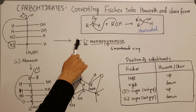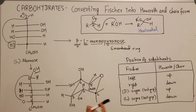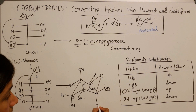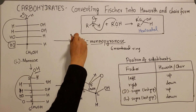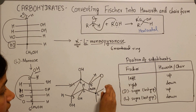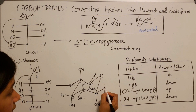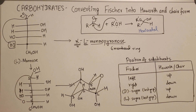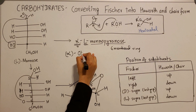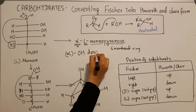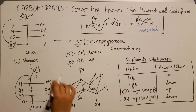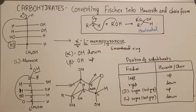This is the anomeric center again. For beta-L, the hydroxy group at the anomeric position is on the upside and H is on the downside. For alpha-L-mannopyranose in the chair form, the hydroxy group is on the downside and H is on the upside. So to summarize: alpha means the hydroxy group at the anomeric position is down, and beta means it is up. This rule holds for all types of sugars.